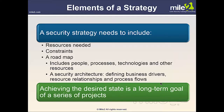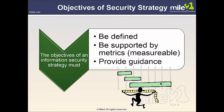Elements of a strategy: a security strategy needs to include the resources required, any restrictions or constraints, a roadmap, the people, processes, and technologies used, the security architecture, defining business drivers, resource relationships, and process flow. The whole idea is to achieve our desired state — a long-term goal made up of many smaller projects. With our information security strategy, this has to be defined with metrics; if we can't measure it, we can't do it justice.